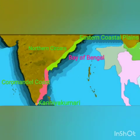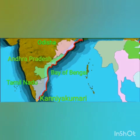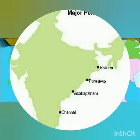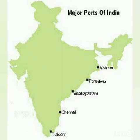The southern part of the eastern coastal plains is known as the Coromandal coast. It covers the coastlines of Andhra Pradesh and Tamil Nadu. Rice, sugarcane and tobacco are grown here. Visakhapatnam, Paradeep, Kolkata, Chennai and Tuticorin are the major seaports lying along the eastern coastal plains.